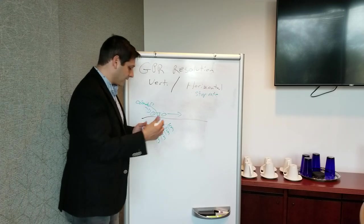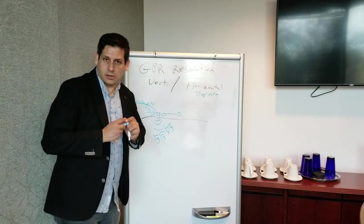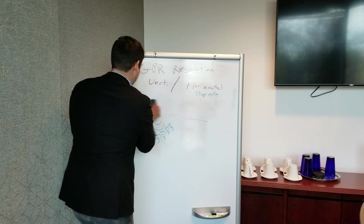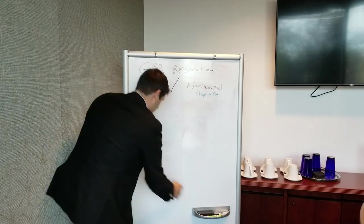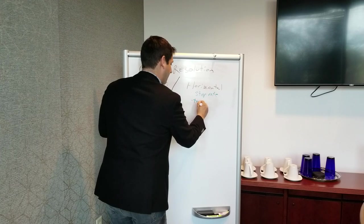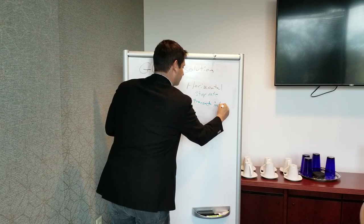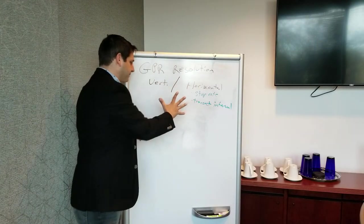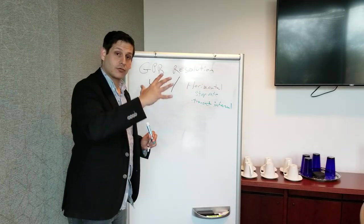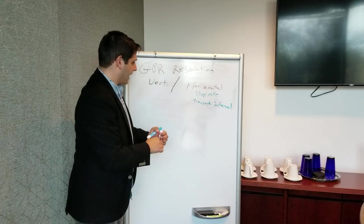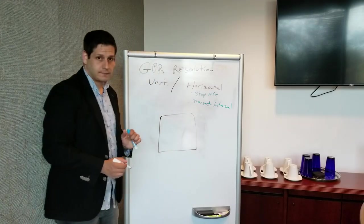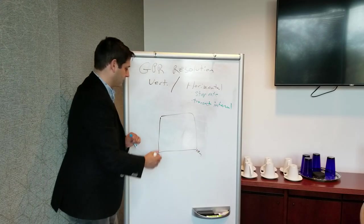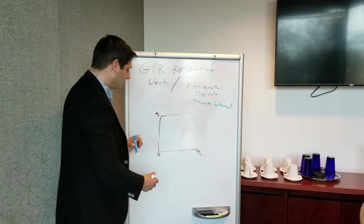The second way to think of this in terms of horizontal resolution is going to be what I call transect interval. Transect interval means if we look top down, like an aerial photograph, top down on your project site. And here's your project site. This is your grid. And this is zero. And this is 10 meters. And so forth.